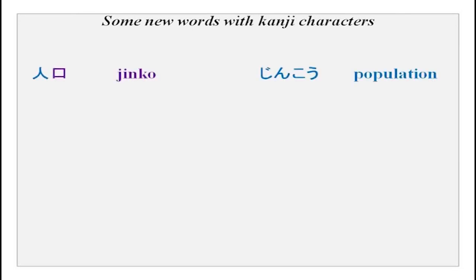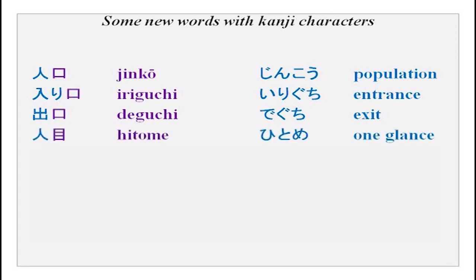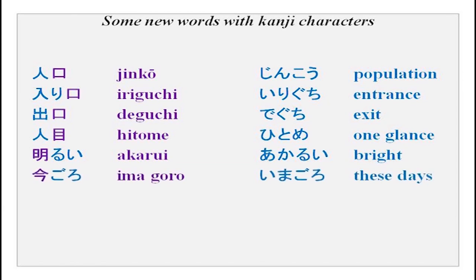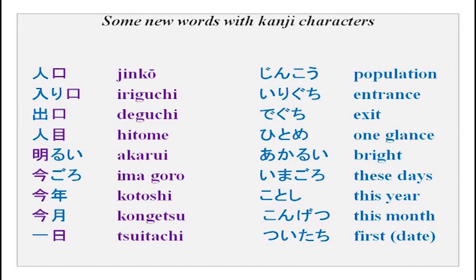There are some words with kanji characters you can use in your conversation and to make sentences: jinko, iriguchi, deguchi, hitome, akarui, imagoro, kotoshi, kongetsu, tsuitachi. The meanings are given on the slide. These are some new kanji characters — most of the words you have already done, but the kanjis are new. You can remember those.